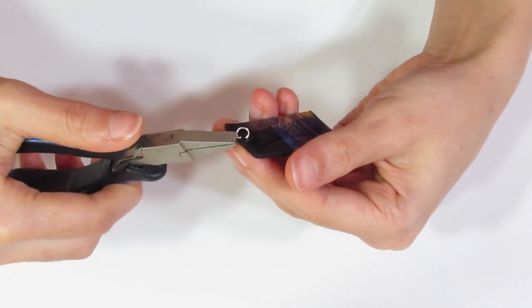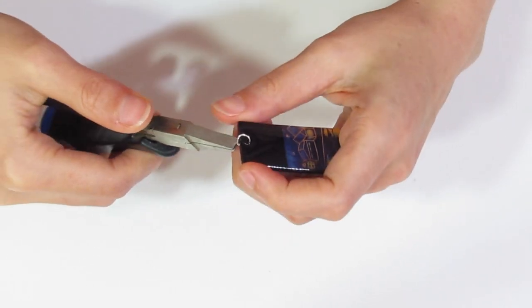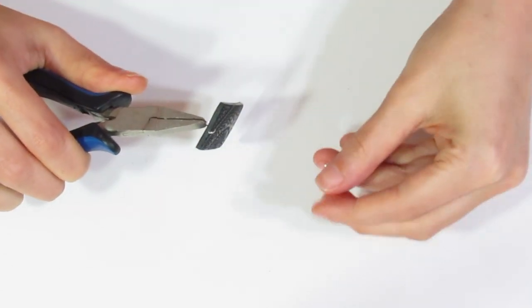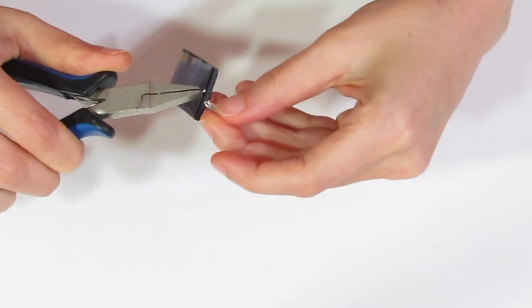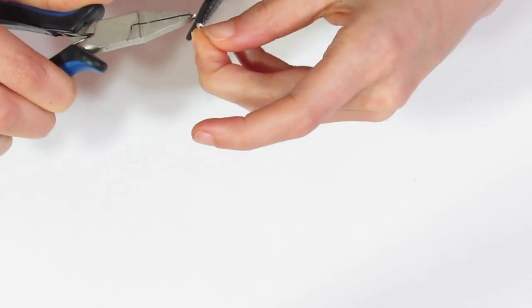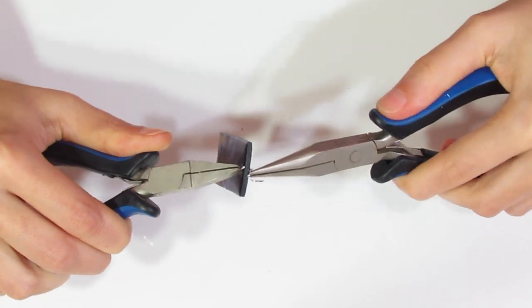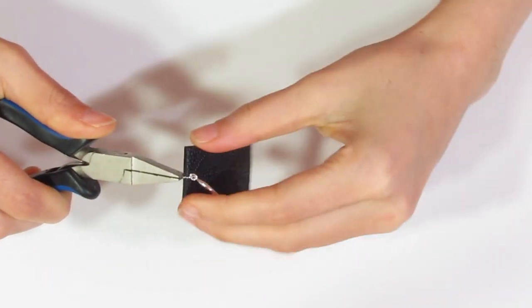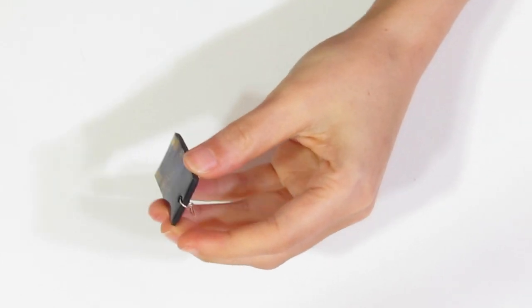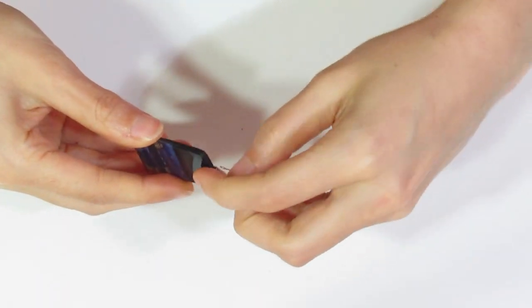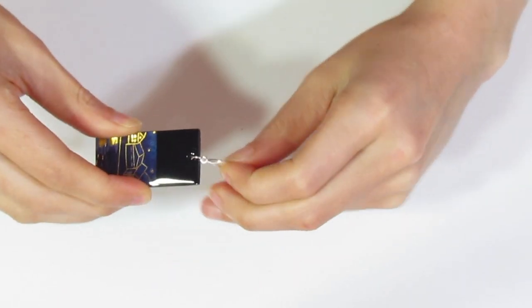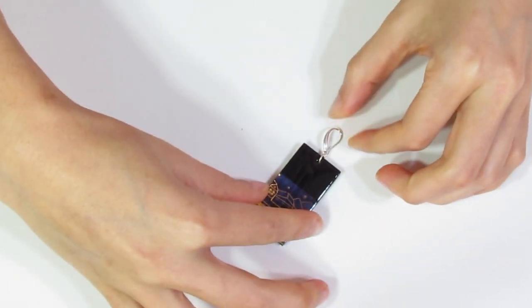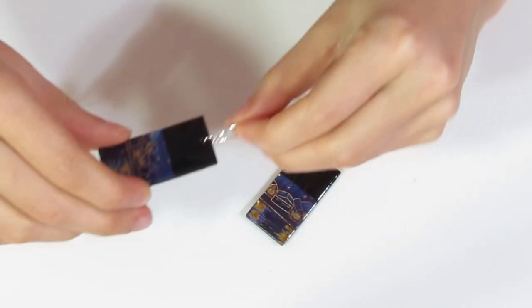Then all you're going to do is you're going to take a jump ring. You can use gold or silver, it's up to you. I'm just going to place that on. Grab my ear wire of choice. Place it on and close the jump ring up. And then I'll rotate the open section back so you can't see it. And then bring the ear wire up. And there we go. It's as simple as that.